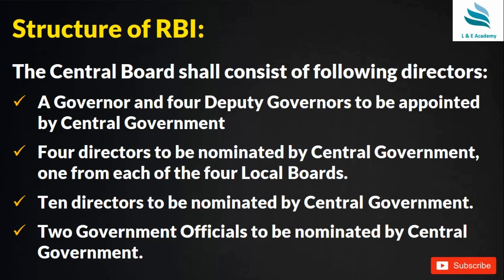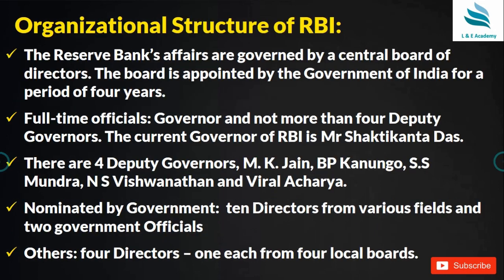The structure of RBI consists of a Governor and four Deputy Governors appointed by the central government, four directors nominated by the central government — one from each of the four local boards — ten directors nominated by the central government, and two government officials nominated by the central government.